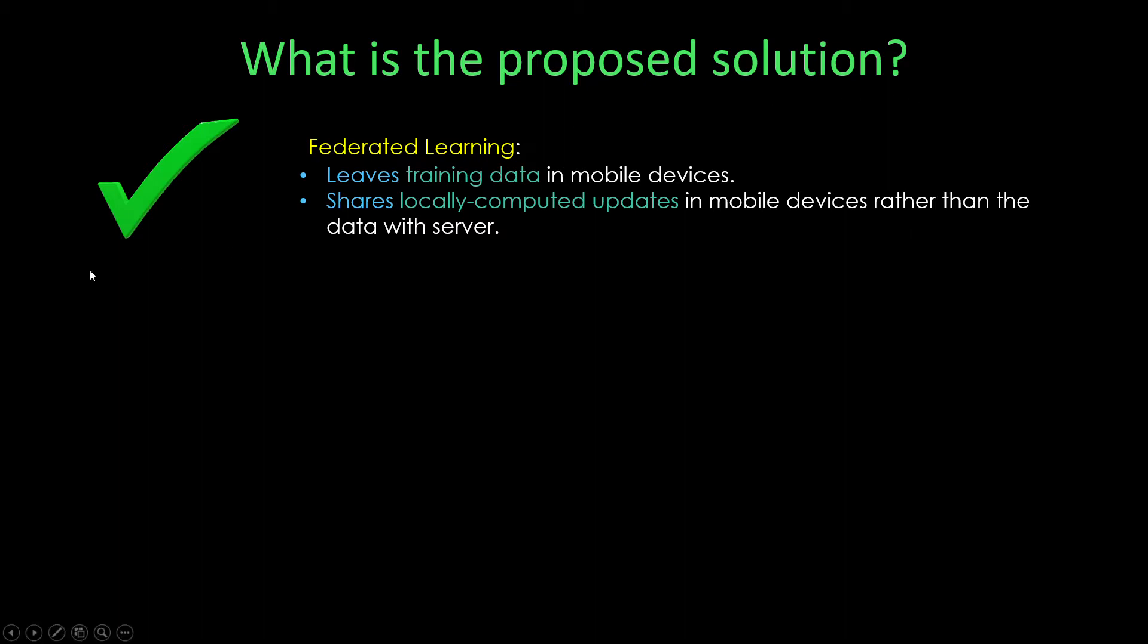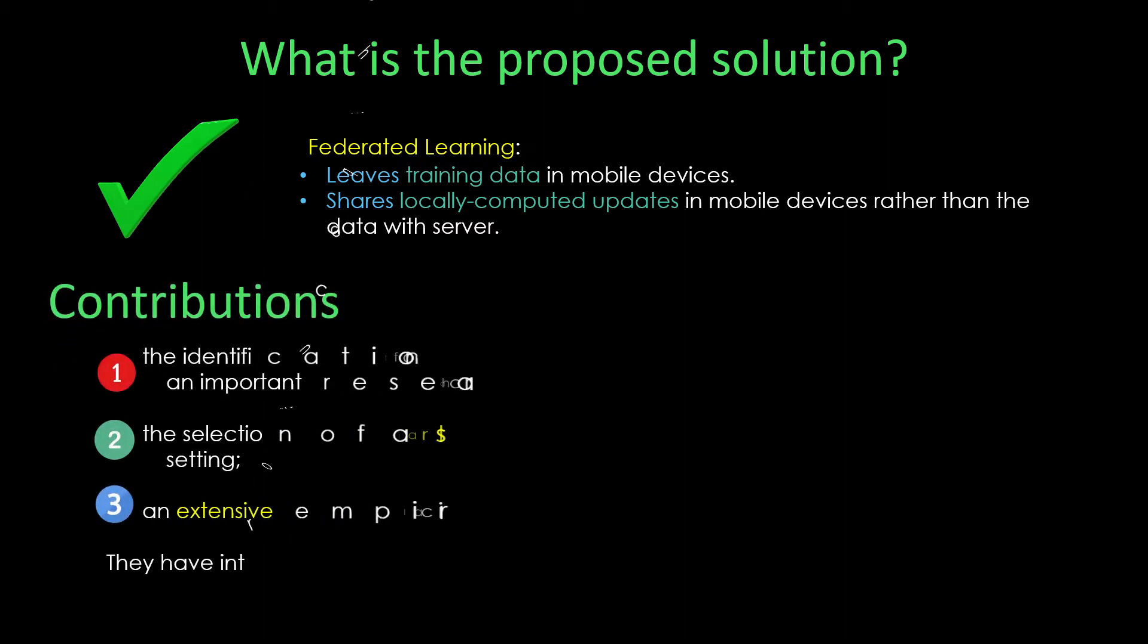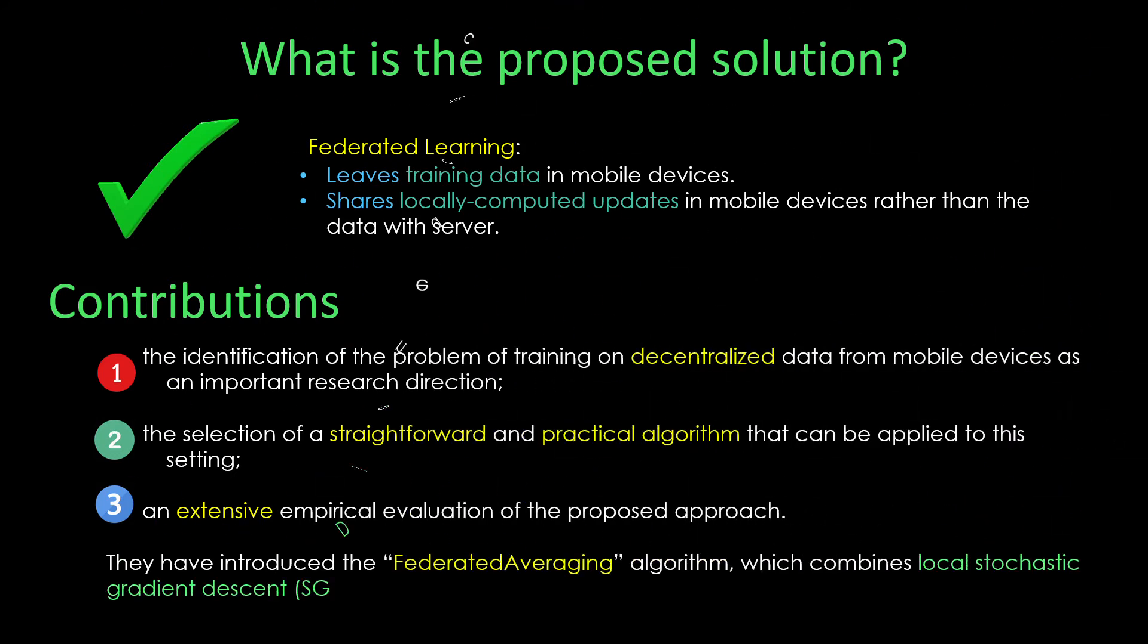In federated learning, the task is solved by participating devices, which we call clients, coordinated by a central server. Each client keeps its local dataset without uploading it to the server. Each client computes the gradient from its own dataset and updates the global model. For each client, this gradient is the only thing shared with the server. In this way, model training is decoupled from the need for direct access to raw training data.